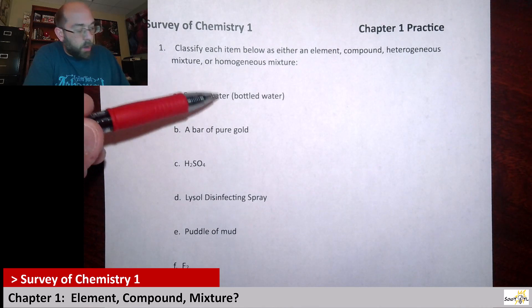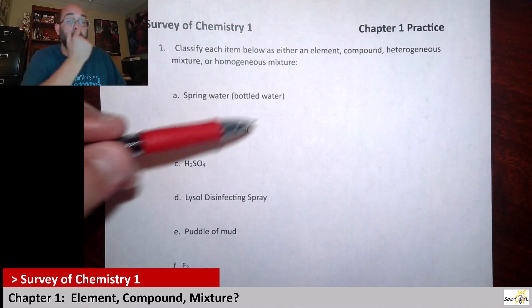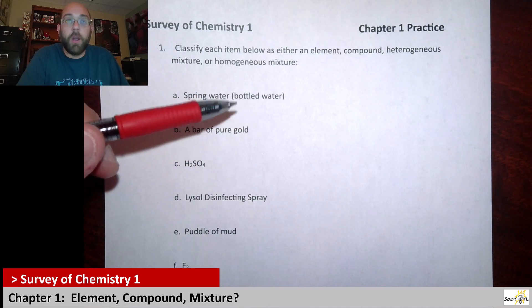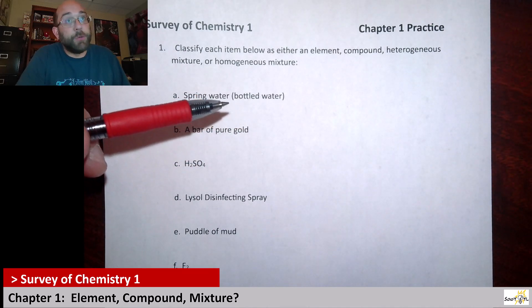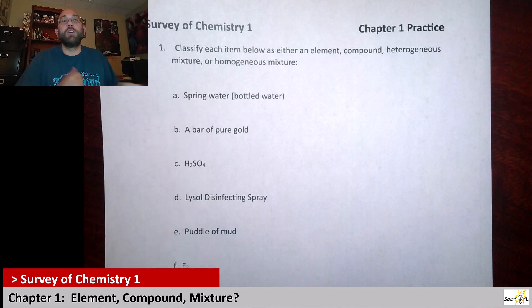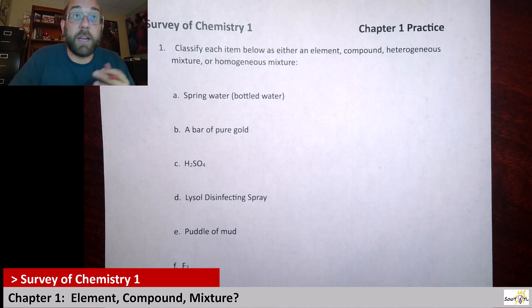Alright, here we go. So our first one says spring water or bottled water. Hopefully if you've ever looked at the ingredients list on a bottle of water, there's more in there than just H2O. There's usually some type of salt or ions or electrolytes. So this is not an element because water is H2O, but it's also not just a single compound because there's more than just H2O.